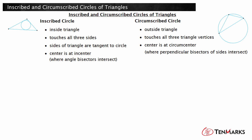Let's look at an example with a circumscribed circle of a triangle. The directions for constructing a circumscribed circle of triangle TRY are shown. Which of the following statements correctly describe how to complete the missing parts of the directions? This problem is missing several parts. The first two steps involve drawing some sort of line involving the sides of the triangle TR and RY. Step 3 says to label the intersection of these lines as Z, and then in step 4, it says Z is the center of the circumscribed circle. The center of the circumscribed circle is the intersection of the perpendicular bisectors of the sides. This tells you step 1 and step 2 must be constructing the perpendicular bisectors of TR and RY, which is choice 3.